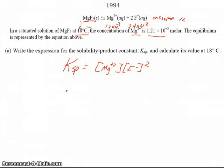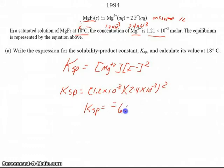So that means for Ksp, I can just sub those values in. Concentration of magnesium, we said, was 1.2 times 10 to the minus 3. And the fluoride has to be twice that value squared, so 2.4 times 10 to the minus 3. Square that value, and we'll see that the value of Ksp is 6.3 times 10 to the minus 9th.